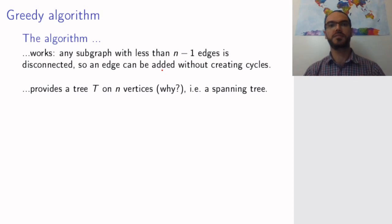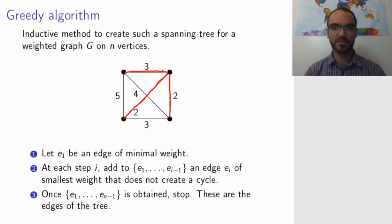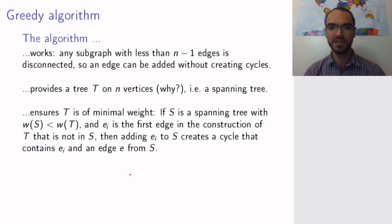The most non-trivial part to show is why this tree has the lowest possible weight. It is kind of intuitive because at each step, I am adding an edge of the smallest possible weight without creating a cycle. So it's not hard to believe that this actually works to give me a tree with as little weight as possible. But let's go through this thoroughly. Why is T of minimal weight? Well, assume it's not. Assume I have a different tree S that has smaller weight. Let's see how this leads us to a contradiction.